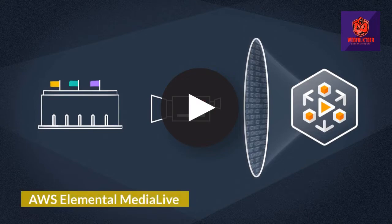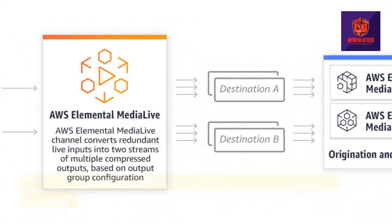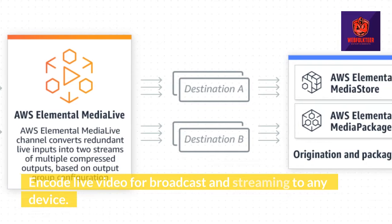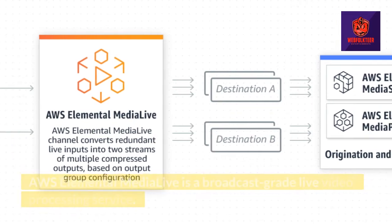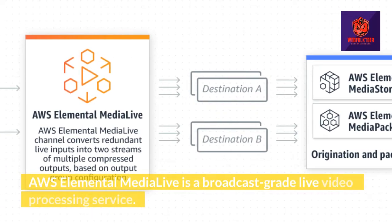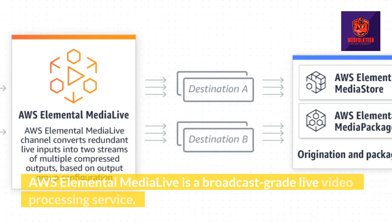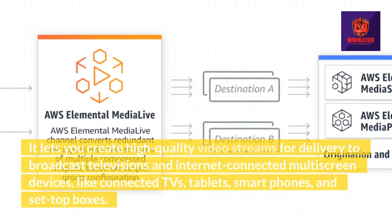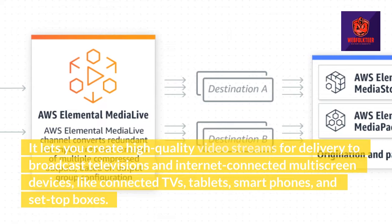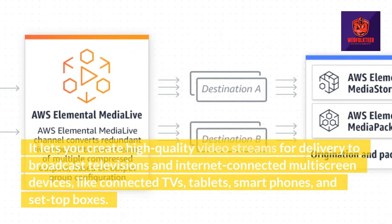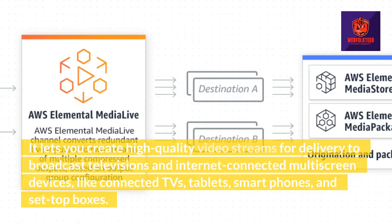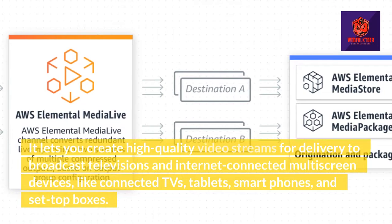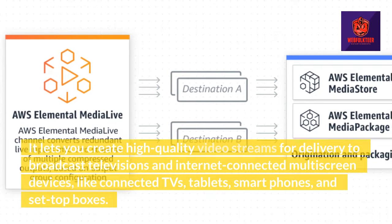AWS Elemental MediaLive is a broadcast-grade live video processing service. It lets you create high-quality video streams for delivery to broadcast televisions and internet-connected multi-screen devices like connected TVs, tablets, smartphones, and set-top boxes.